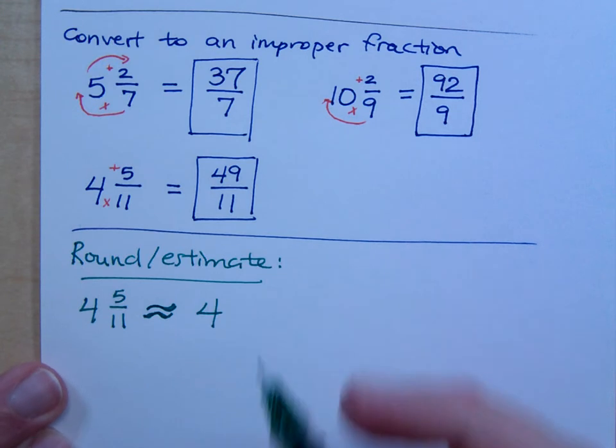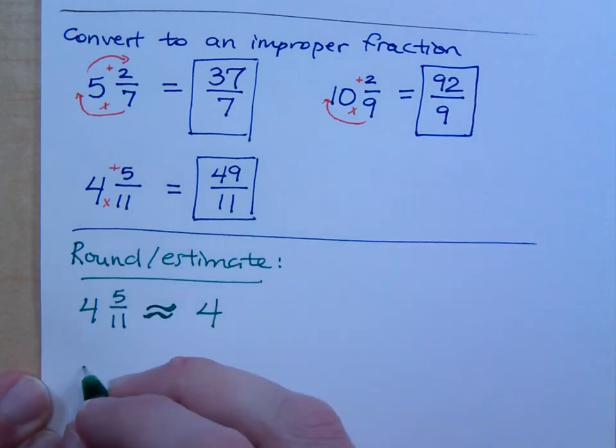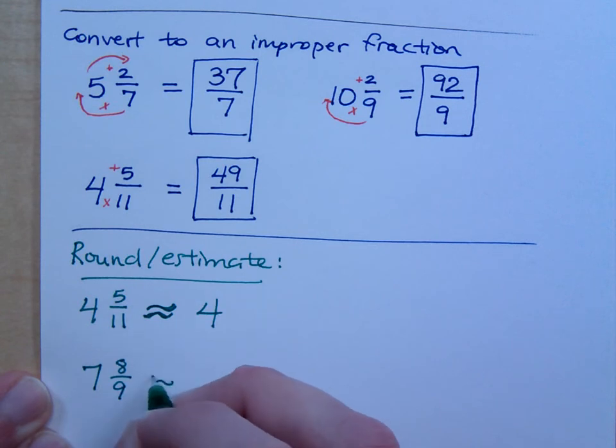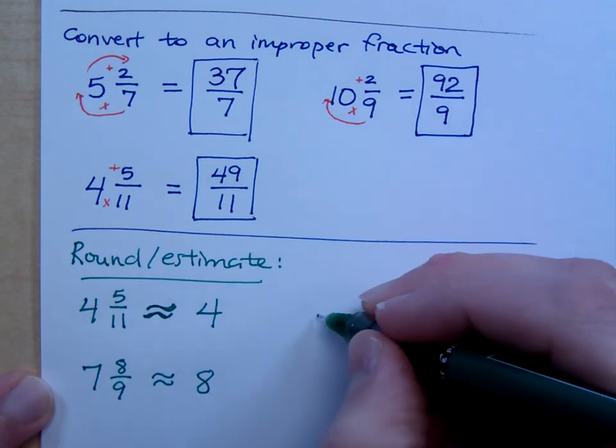If I were to say 7 and 8 ninths, how might you round that guy? That guy's close to 8. You see that 8 over 9, that's really close to being 9 over 9. So that's close to being another whole unit.